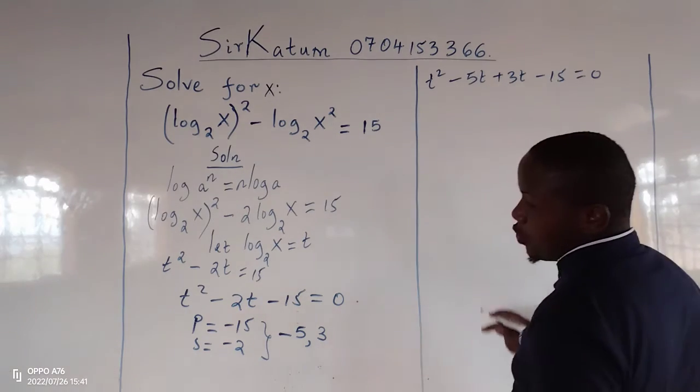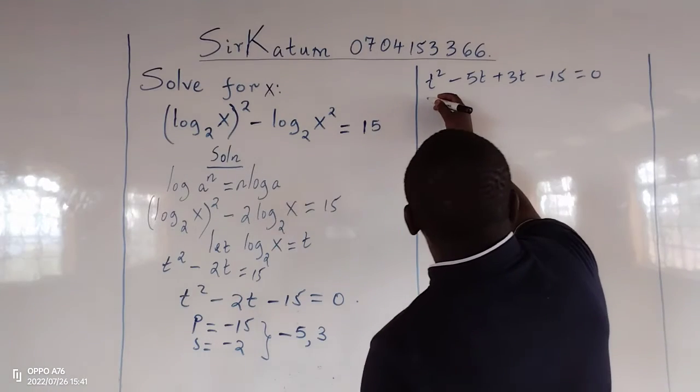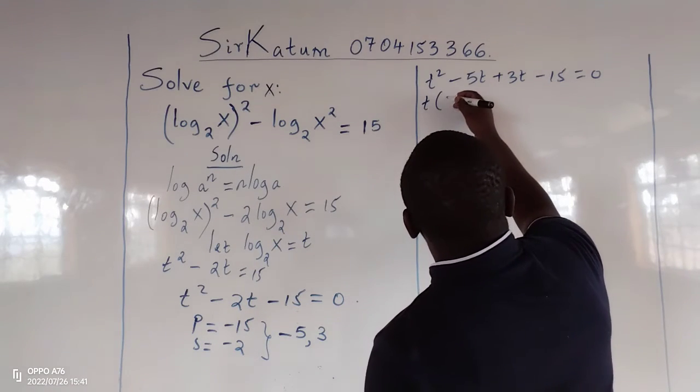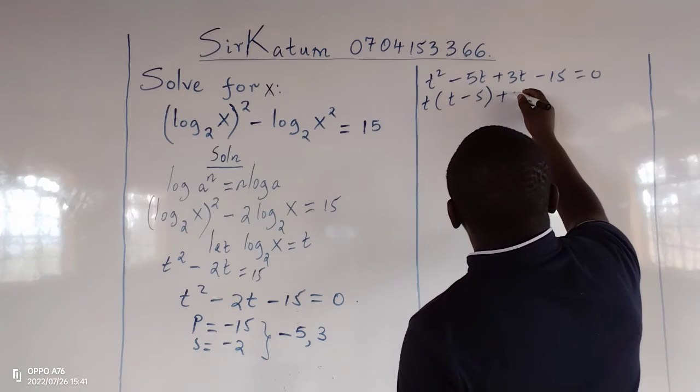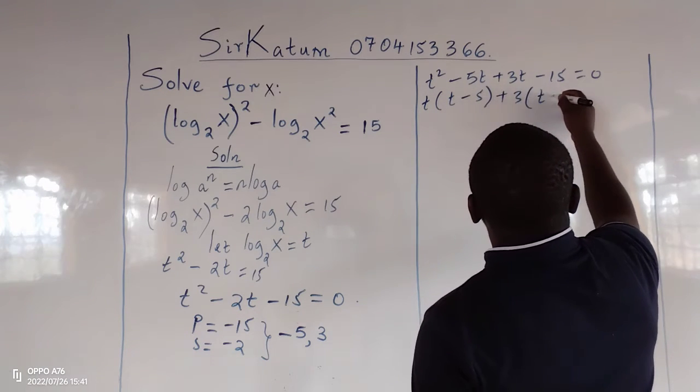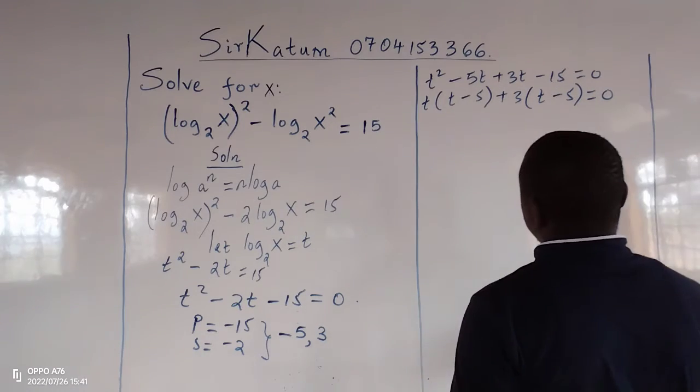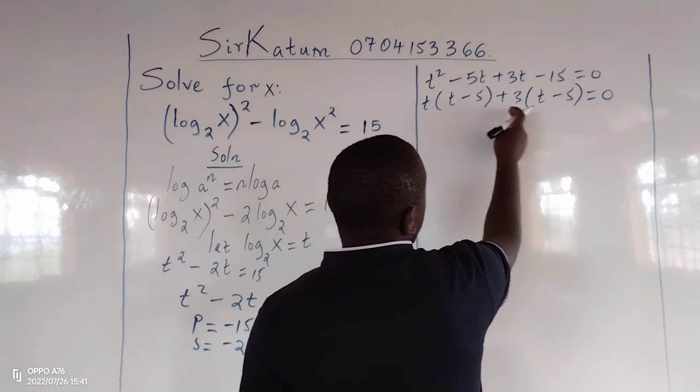Then in every two terms we factor out, such that we have t which is common, so we remain with t minus 5, plus 3, we remain with t minus 5, equals 0. So we pick t minus 5.